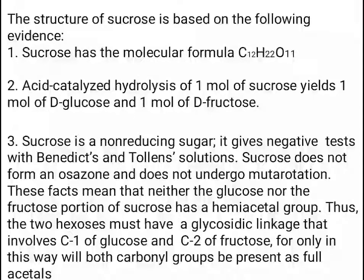The structure of sucrose is based on the following evidence: sucrose has the molecular formula C₁₂H₂₂O₁₁. Acid-catalyzed hydrolysis of one mole of sucrose yields one mole of D-glucose and one mole of D-fructose. Sucrose is a non-reducing sugar — it gives negative tests with Benedict's and Tollens' solutions, does not form an osazone, and does not undergo mutarotation. This means neither glucose nor fructose has a free hemiacetal group, so the glycosidic linkage involves C1 of glucose and C2 of fructose, making both carbonyl groups full acetals.